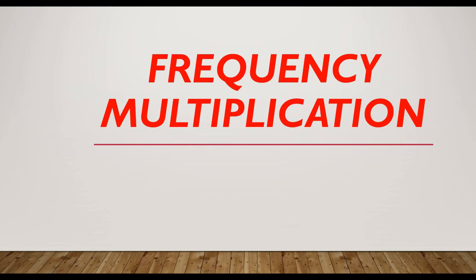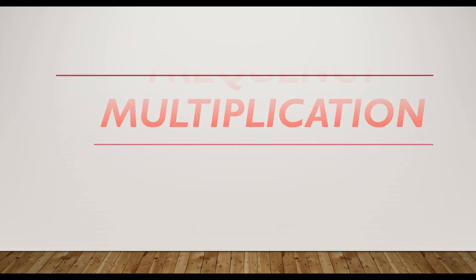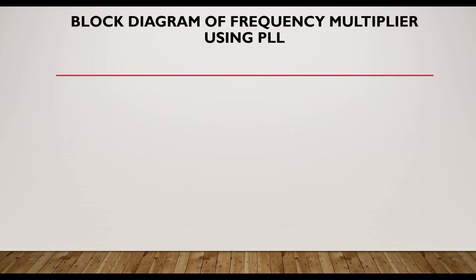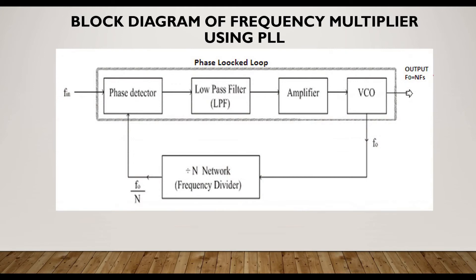We will study frequency multiplication using PLL, that is Phase-Locked Loop system. First we will see the block diagram of a frequency multiplier. This frequency multiplier is divided into two parts: first one is the phase lock loop system, and second one is the divide-by-N network, which is a frequency divider.